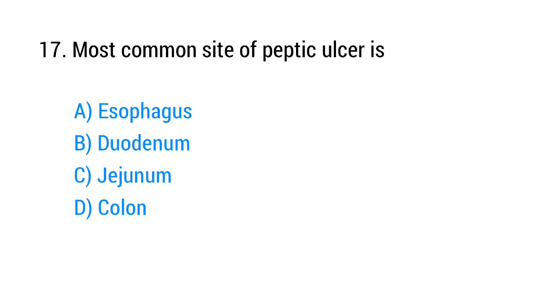Question number 17. Most common cause of peptic ulcer is? The right answer is option B: Duodenum.